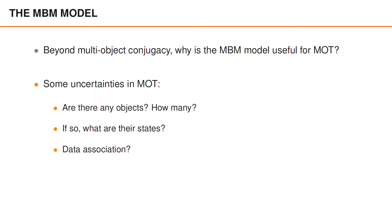The answer has to do with some of the uncertainties in multiple-object tracking. Specifically, we do not know if there are any objects in the surveillance area, and if there are, we do not know how many they are. If there are objects in the surveillance area, we do not know their states, and lastly, the data association is unknown.